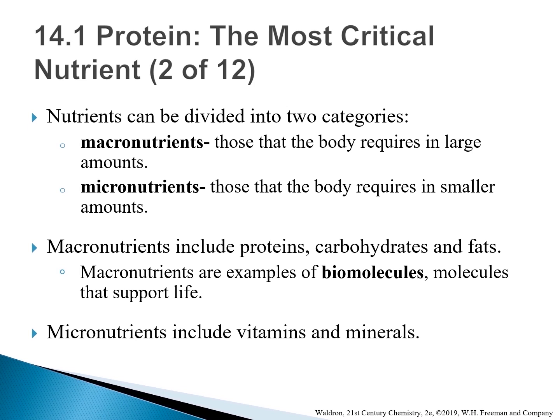Nutrients can be divided into two categories: macronutrients and micronutrients. Protein, carbohydrate, and lipid — also known as fat — are the three major macronutrients required by the human body in large amounts. All three are essential to a healthy diet and are examples of biomolecules, the molecules that support life. A healthy diet also includes micronutrients, such as vitamins and minerals, which are substances required in small amounts.